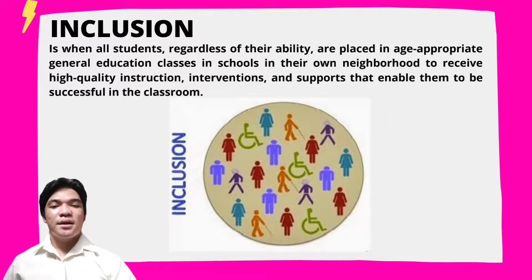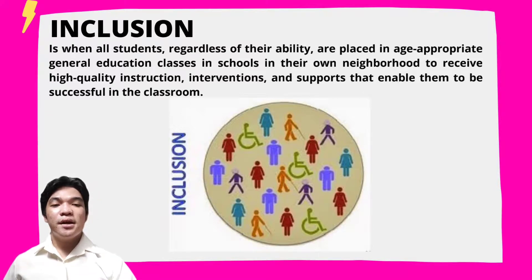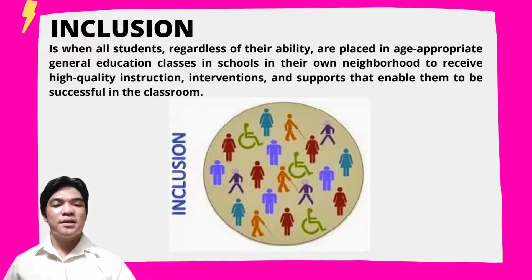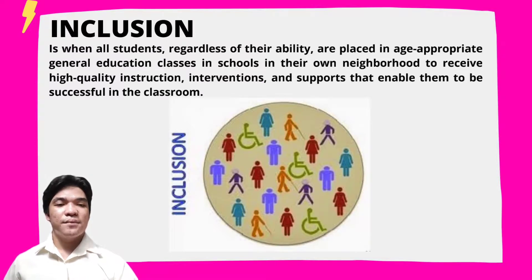Fourth, inclusion: all students, regardless of their ability, are placed in appropriate general education classes and schools in their own neighborhood to receive high-quality instruction, interventions, and supports that enable them to be successful in the classroom. Students with or without disabilities are placed together, receiving equal, high-quality instruction and interventions.